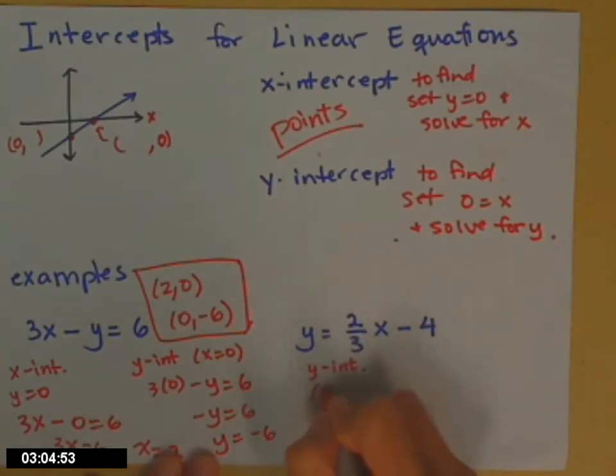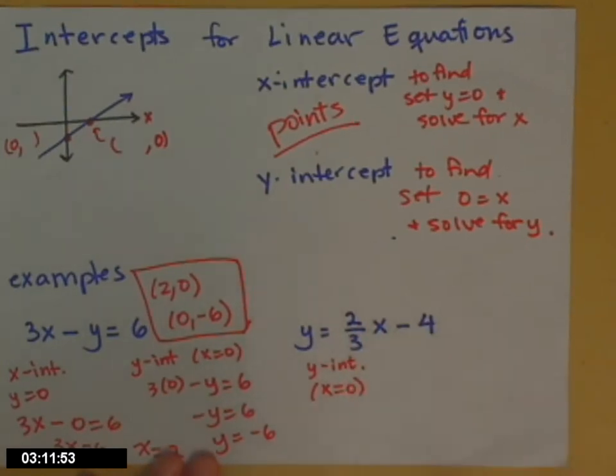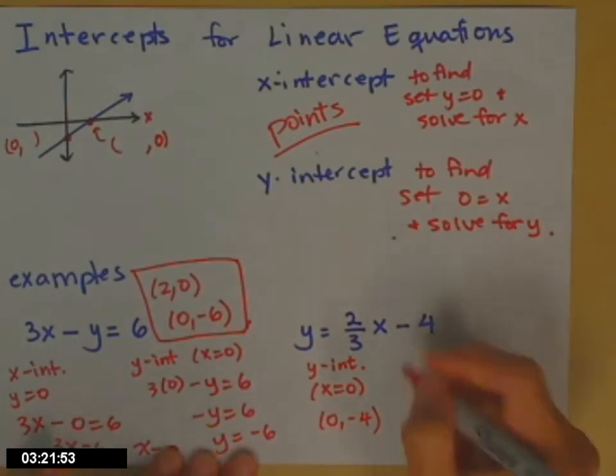If you don't, go ahead. Plug a 0 in for x. See what happens. 0 in for x times that slope number makes that part go away. That means that negative 4 is your y-intercept. Again, we're looking for smiley faces from your teacher, so we're going to put a negative 4 in parentheses with a 0 in the right spot.